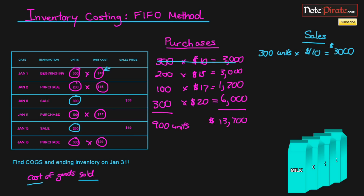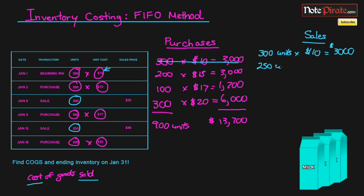We've eliminated that first batch of inventory, and we remove that milk carton — the oldest milk is at the front while the newest is at the back, just like in a real store. Since we've expensed the first inventory we purchased, that's the first one to go. The next sale is 250 units.